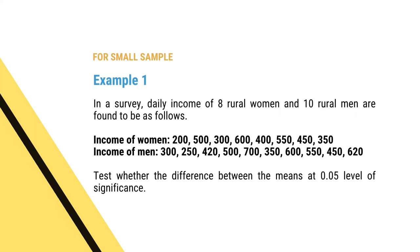Now let us consider small samples. We will examine the concept with an example. In a survey, the daily income of 8 rural women and 10 rural men were recorded. Income of women (in rupees): 200, 500, 300, 600, 400, 550, 450, 350. Income of men (in rupees): 300, 250, 420, 500, 700, 350, 600, 550, 450, 650, 620. Test whether the difference between the mean income is significant at 0.05 level of significance.